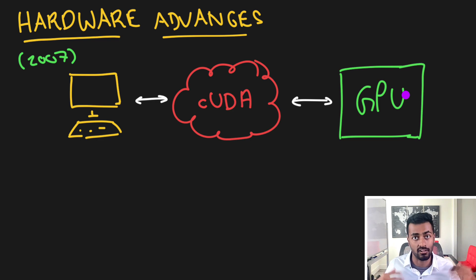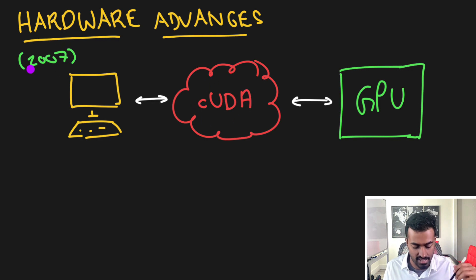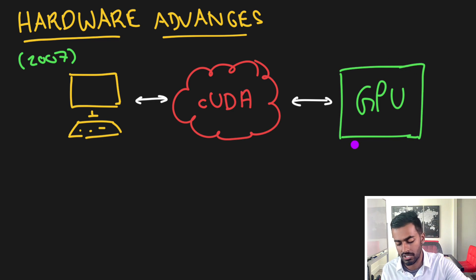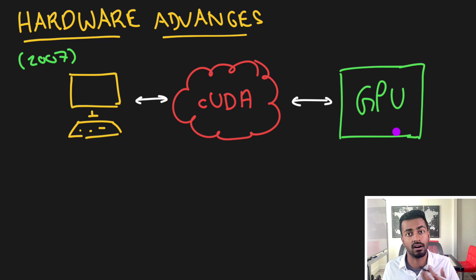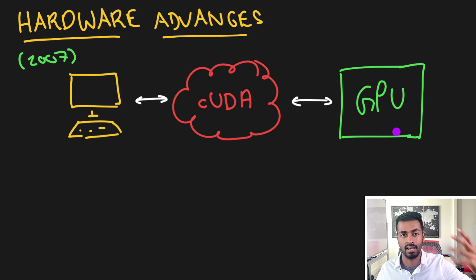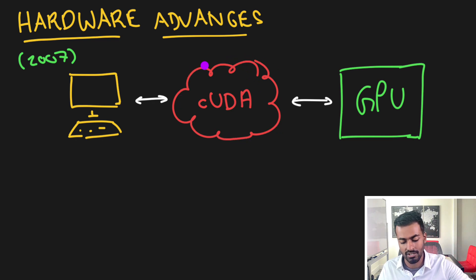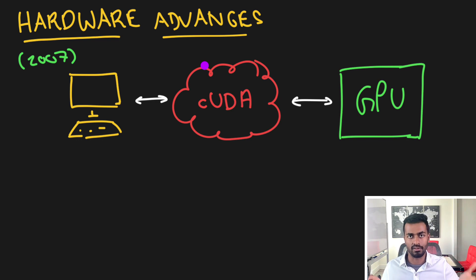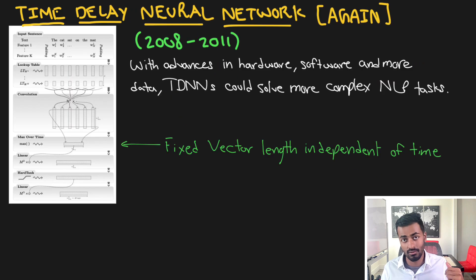Apart from the software advances, there was a really instrumental hardware change that affected how NLP evolved — this was the introduction of CUDA by NVIDIA in 2007. CUDA acts as an interface between the developer and the GPU, allowing us to make use of the advantages that GPUs provide — that is, parallel computation. With the rise of neural networks which were designed to handle and process inputs in parallel, this became a huge game changer that actually revolutionized not just natural language processing but even the deep learning revolution itself.